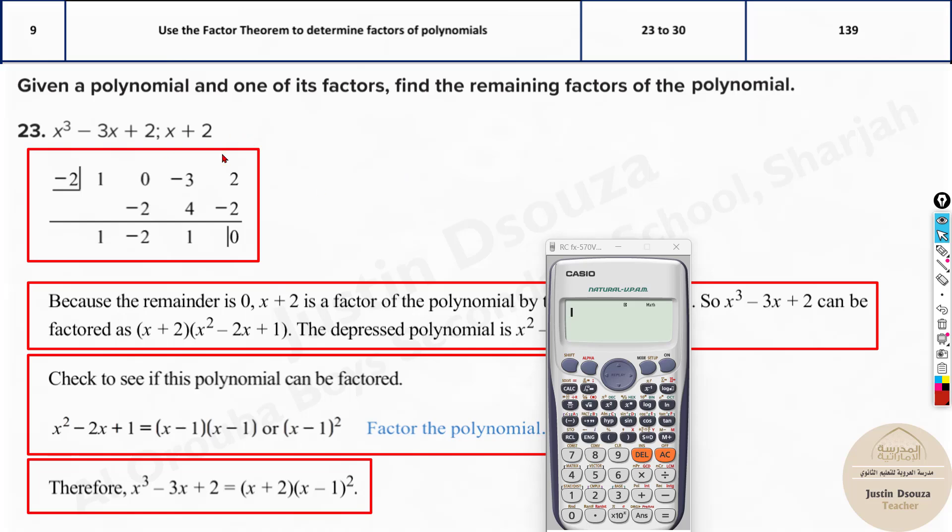There are a couple of methods. The first method is mode 5 and option number 4. This is a cubic equation. Before x³ is 1, but what is before x²? There's nothing, so it should be 0. Then x is -3 and lastly we have the constant 2.